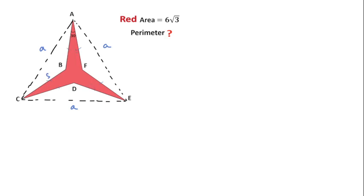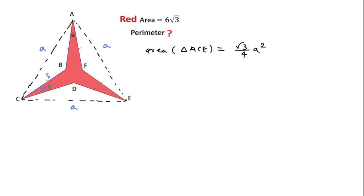First, I will find the area of equilateral triangle ACE, which equals (√3/4)·A². I will write A² in terms of S. Since this angle is 30 degrees, this angle should also be 30 degrees. Each angle of the equilateral triangle is 60 degrees, so this angle will be 15 degrees and this angle will also be 15 degrees.